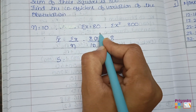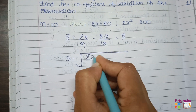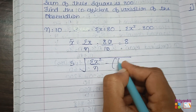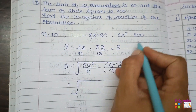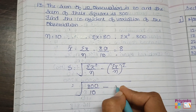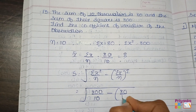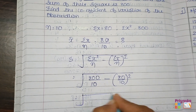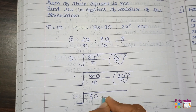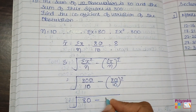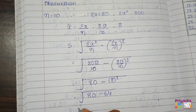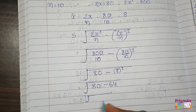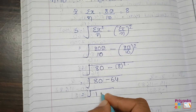Next find standard deviation using the raw data formula: square root of (sigma x-squared upon n) minus (sigma x upon n) whole square. That is square root of (800 divided by 10) minus (80 divided by 10) squared, which equals square root of 80 minus 64, giving square root of 16 equals 4.